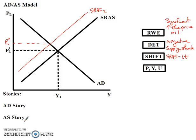Let's record that down here. My aggregate supply story is that we got an increase in the price of oil. That increase in the price of oil raised the cost of doing business, caused a decrease in production, and as a result the aggregate supply curve shifts to the left as companies reduce production.